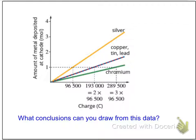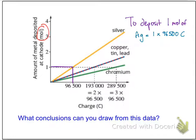Here is another bit of data. What conclusions can you draw? If you look at the y-axis this time, it isn't mass — it's moles. It says amount of metal deposited at the cathode in moles. On the x-axis you've got multiples of 96,500, and that's the charge in coulombs. To deposit one mole of silver, you need one lot of 96,500 coulombs. To deposit one mole of either copper, tin, or lead, you need two lots of 96,500 coulombs.